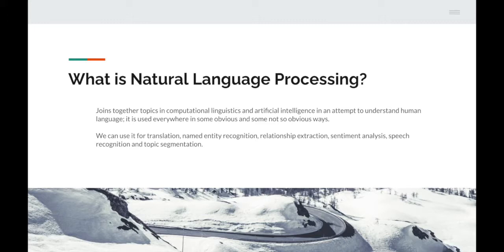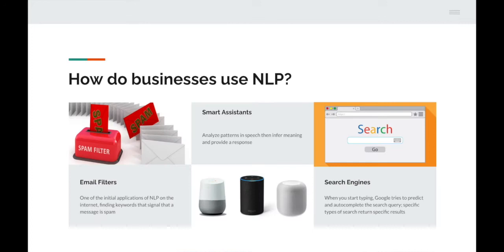How do businesses use NLP? There are various ways — we're going to go through six of them now. First is email filters. One of the initial applications of NLP on the internet was to find keywords that signal that a message is spam — so when there's a dodgy link or something unusual like that, NLP detects it and sends that email off to a spam folder.